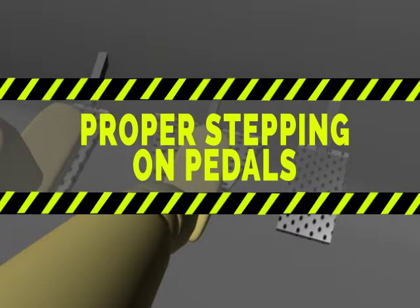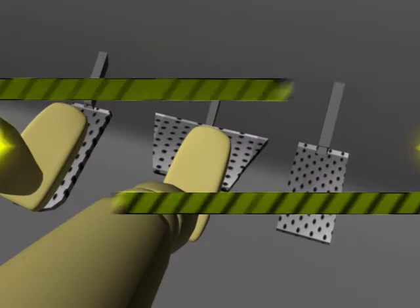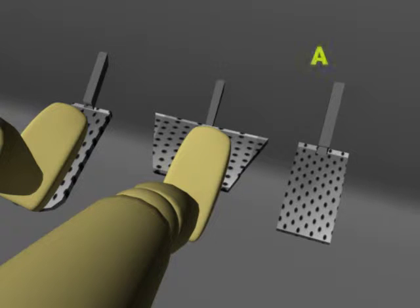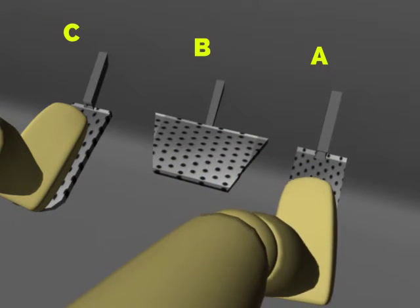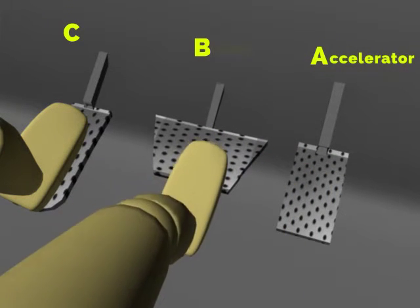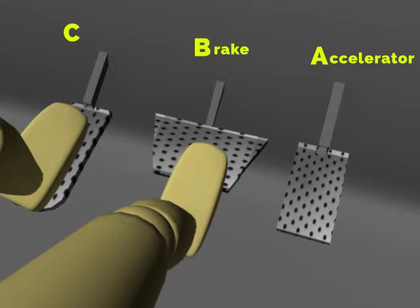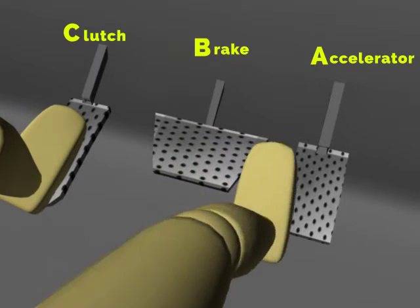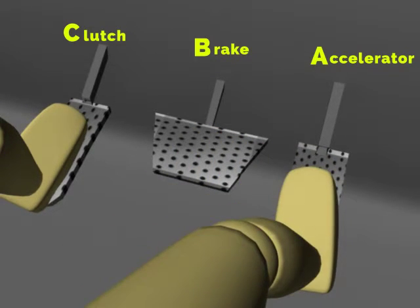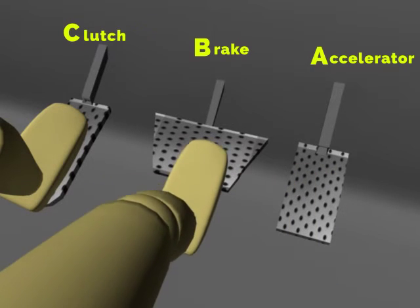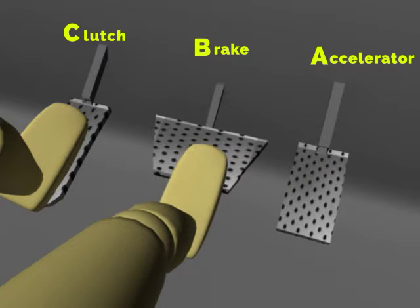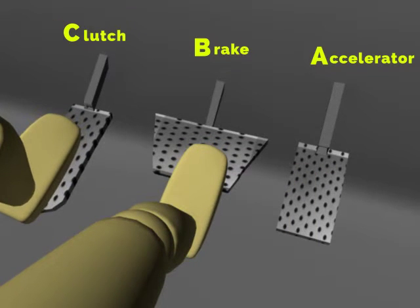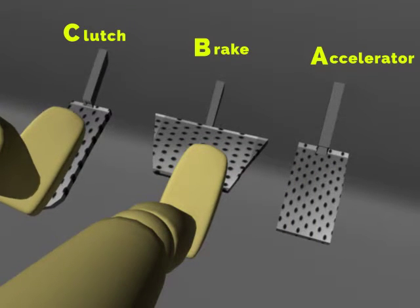Proper stepping of pedals: the simple uses of pedals are guided by A, B, C. A for accelerator, B for brake, and C for clutch. The accelerator is used to accelerate the car, and the brake for stopping the car.